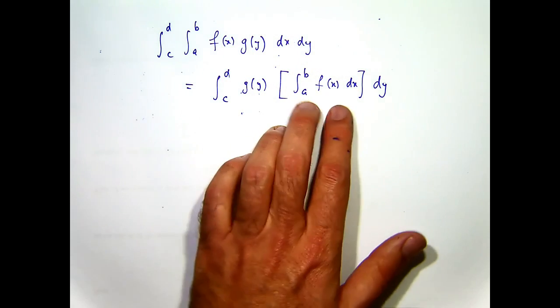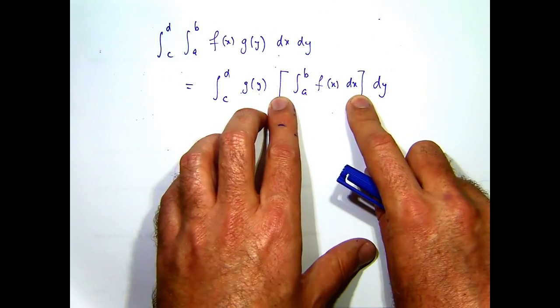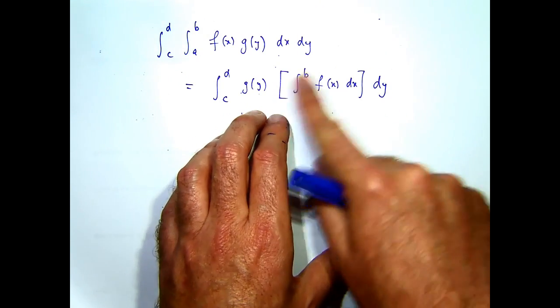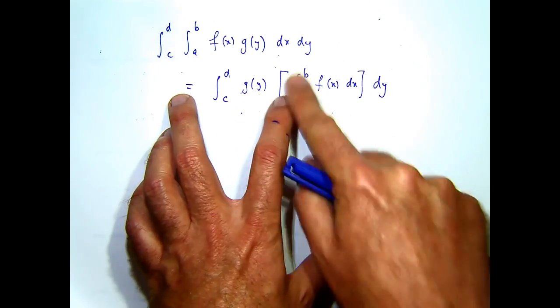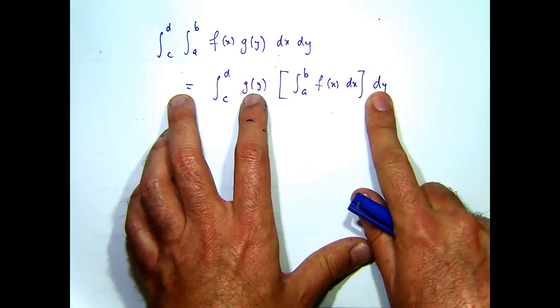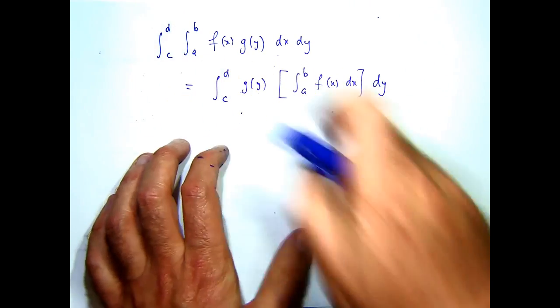Now look at this boxed integral. That's going to be a constant when I evaluate it, so for the final integral, I'm imagining this is just a constant and I'm integrating with respect to y, so this can come out the front.